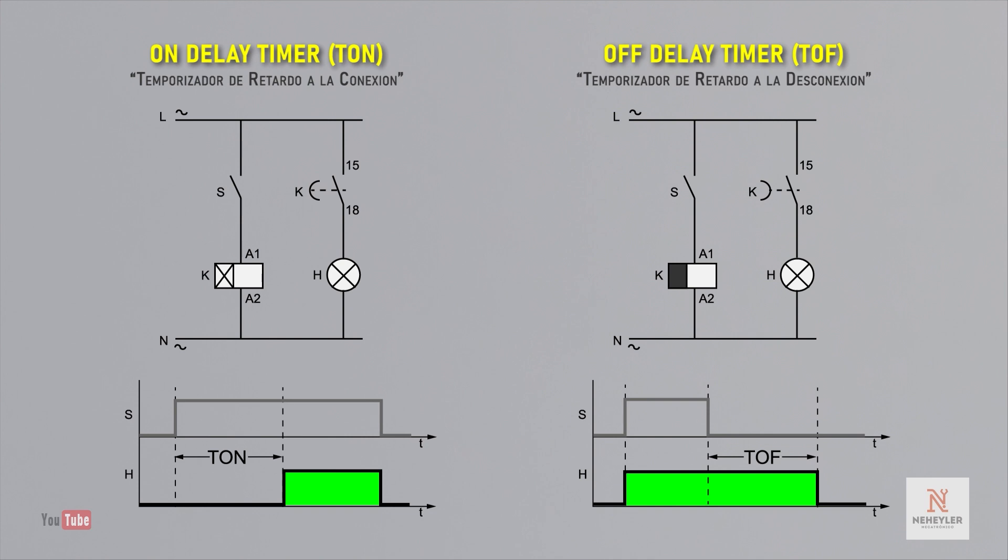On the left side is shown a circuit with an on-delay timer, known by its abbreviation TON. This allows connection to the circuit by switching its contacts after a certain time after the activation signal has been generated.